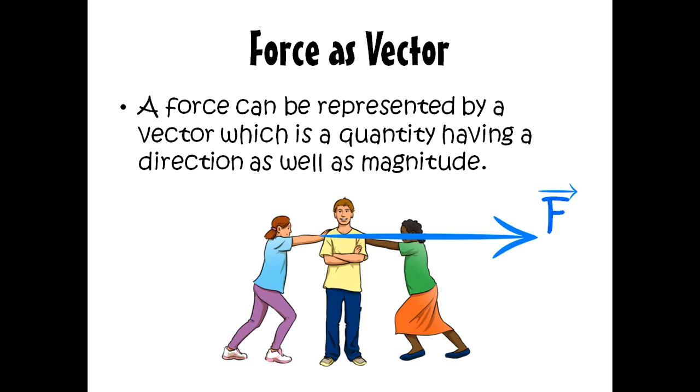So she is exerting a right force with direction, while the green lady is pushing the man to the left. So the force has direction as well as magnitude. Magnitude is the strength of the force. As we increase the strength of the force, we are increasing the length of the drawn vector.